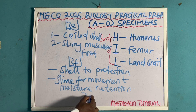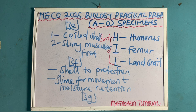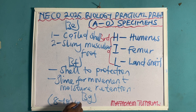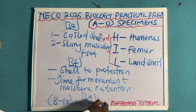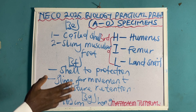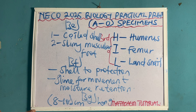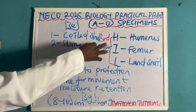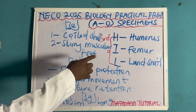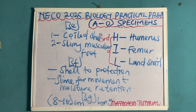Question 3G: they can ask you to make a well-labeled diagram, eight to ten centimeters long, of specimen L, the land snail. You need to know the diagram of the land snail — observe it, know how to draw it, and label it properly. Note that they may not ask you to draw anything related to the humerus or femur.